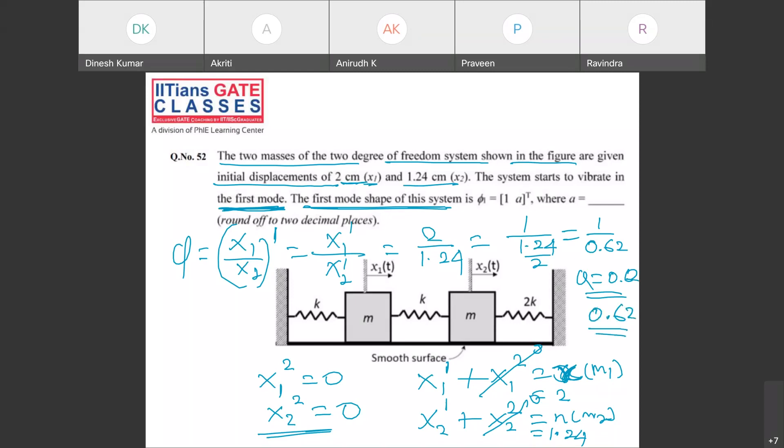Is this clear guys? It is a very simple question. They told the system vibrates only in first mode, so when it vibrates in first mode we know this amplitude will be 0, X₁ corresponding to second mode and X₂ corresponding to second mode will be 0. We know these conditions are from initial condition when velocity is 0 at t equal to 0.